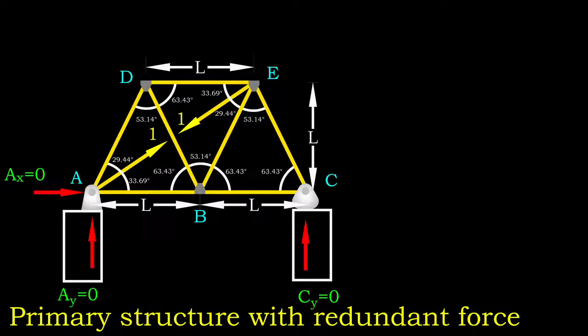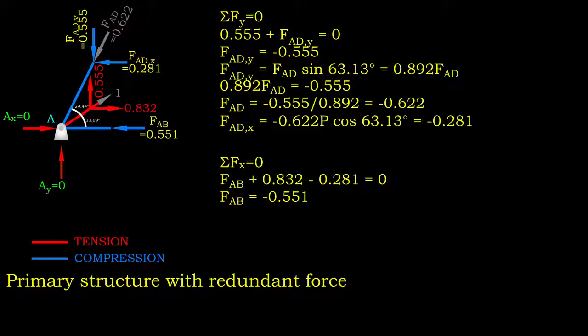Next, let's proceed to virtual loading case. No reaction force is developed in support since the truss is not subjected to external loading. Both BC and CE are zero force members after we conduct method of joints and focus on node C. Proceed to node A. The unit redundant force is resolved into X and Y components. We can solve for member AD and AB afterwards. Next, we solve for both node D and E and obtain the force in all members using virtual loading case.